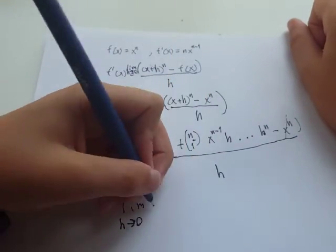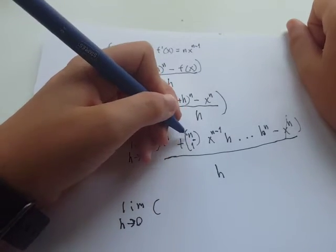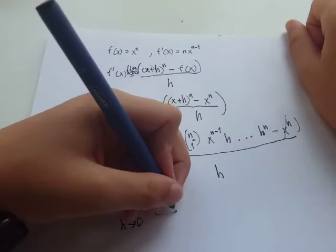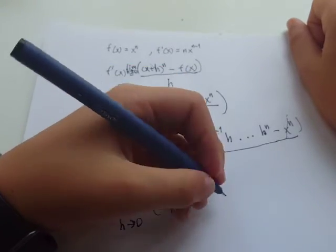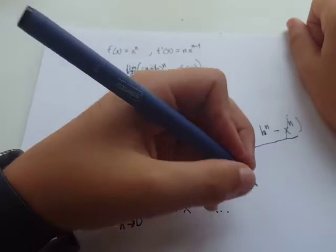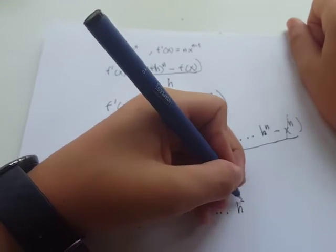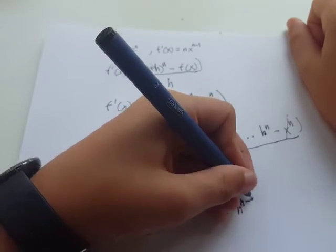So then we're left with n choose 1, which is just n, times x to the n minus 1, then dot dot dot, until h to the n minus 1.